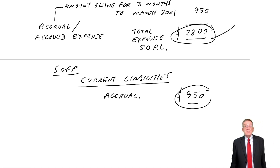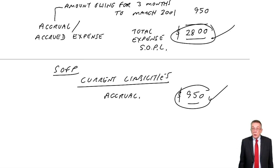That's what will appear on the statement of profit or loss, 2,800, the expense of the year. That's what will appear in the statement of financial position, the liability, the accrual.